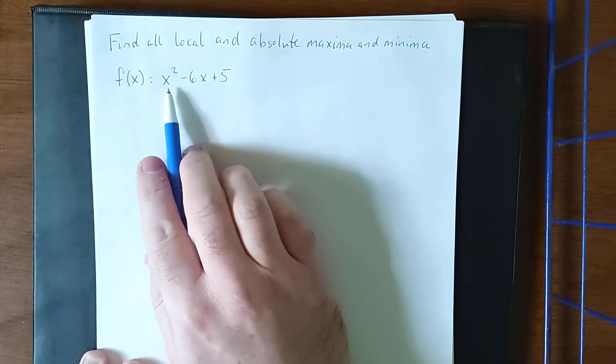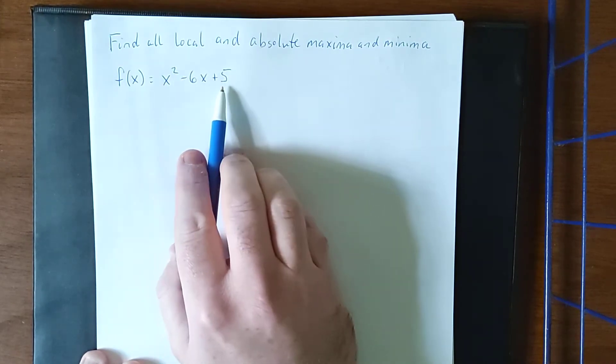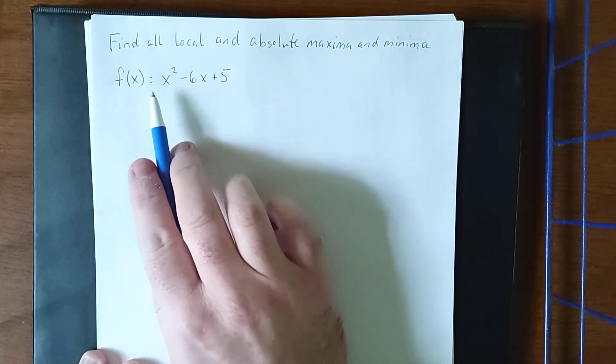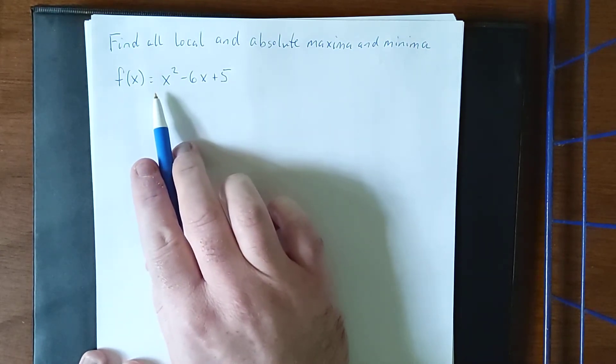So with that in mind, I'd like to consider f(x) = x² - 6x + 5. I recognize this as a quadratic function. Its graph will be a parabola opening in the upward direction because of the positive lead coefficient.